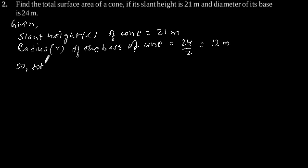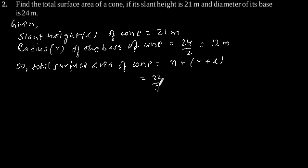Total surface area of the cone is equal to π R (R + L). Putting the value of R and L, we will get 22 by 7 into R is 12 and L is 21.